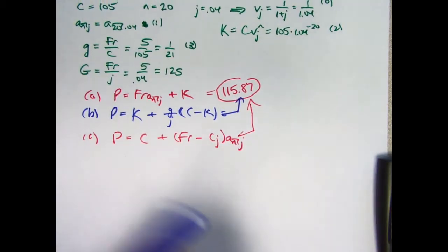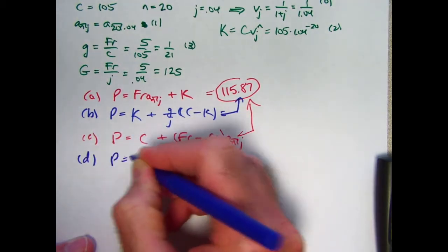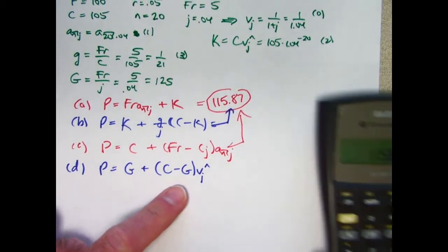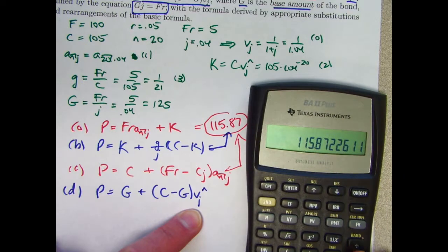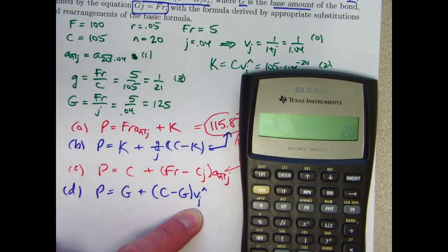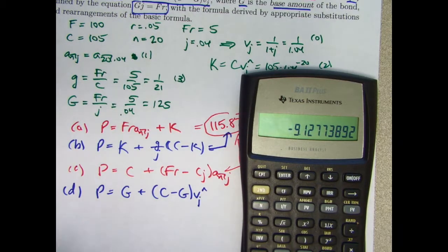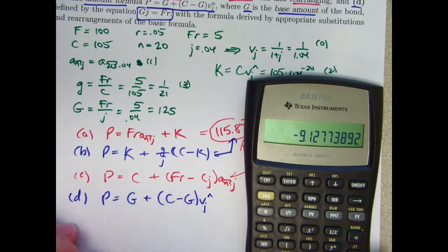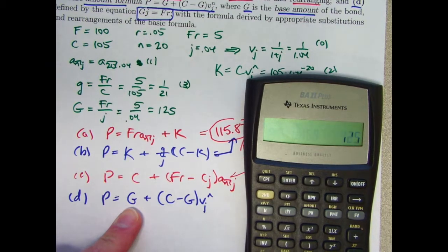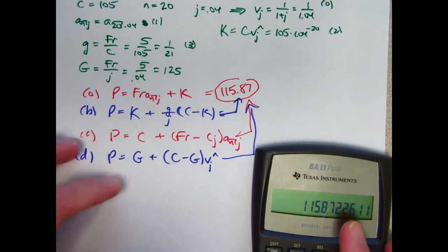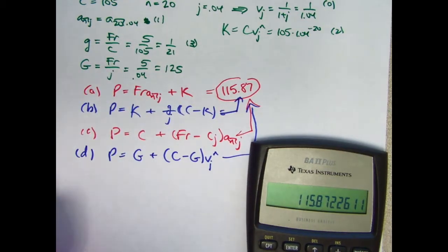Finally, we are on to the base amount formula. P is capital G plus C minus capital G in parentheses times V to the N. G and C are simple quantities. It's only V to the N that takes a little work. There's V, raise it to the 20th power. Look at that. C is 105. Capital G is 125. This difference is negative 20. Multiply this by 20. Put a negative sign there. This bond is selling at a price less than its base amount, whatever that might mean in a practical sense. Probably not typically told the base amount, but maybe it would be sometimes. Capital G is 125. I add 125 to this and get the same answer. So I have done the problem. I have verified that all four formulas give you the same answer, and that same answer is 115.87. That would be the price.